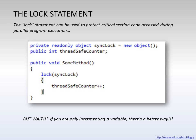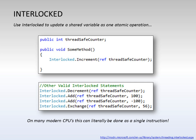However, the lock statement is also pretty slow, and there are a lot of other faster alternatives out there that when used with caution can achieve much better results. A great example of this is using the Interlocked class. What Interlocked provides is a method to update a shared variable in one atomic operation. So instead of using the lock statement, in cases where you're simply incrementing a counter, exchanging a variable, or adding two values together, you can do that using the Interlocked Increment, Decrement, Add, and Exchange methods.